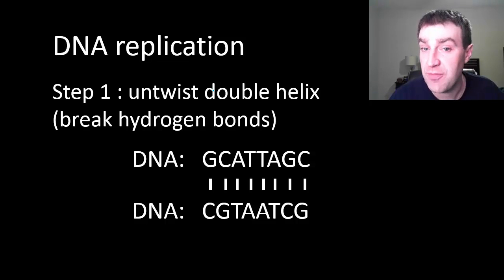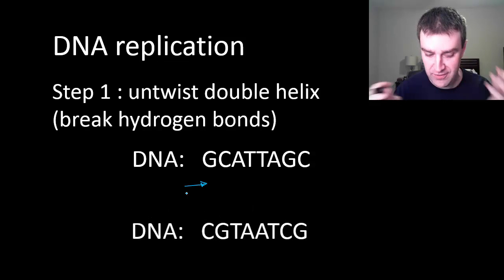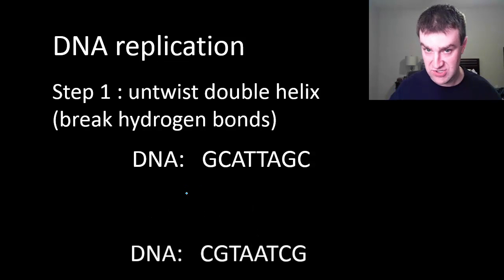So let's go through the process. The first process is going to be to access the code. In order to do anything with the code we have to be able to read it. So that means that proteins are going to come in and untwist the double helix and that essentially breaks the hydrogen bonds in between the nitrogen base pairs. If they kind of break, that will effectively separate the two strands and now we can read the nitrogen bases in between.